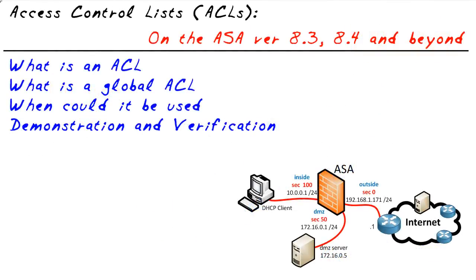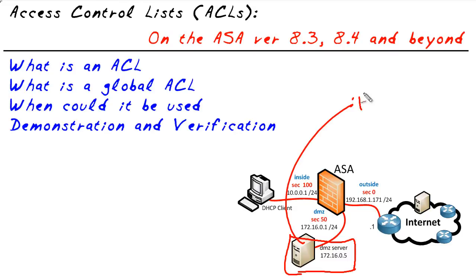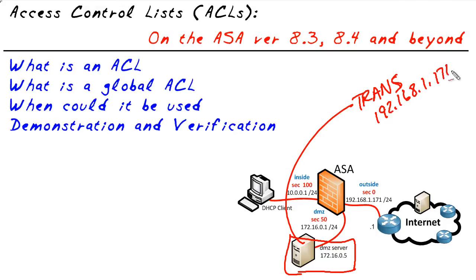Let's set the stage of what we're going to do. Let's say we have a DMZ server right here — it's ready to go, it's running, it's got this IP address. To allow access from the Internet to this device, we have to have a translation, a mapped address. The address we're going to use in this example is 192.168.1.176, and we'll just pretend that that's a globally routable address.